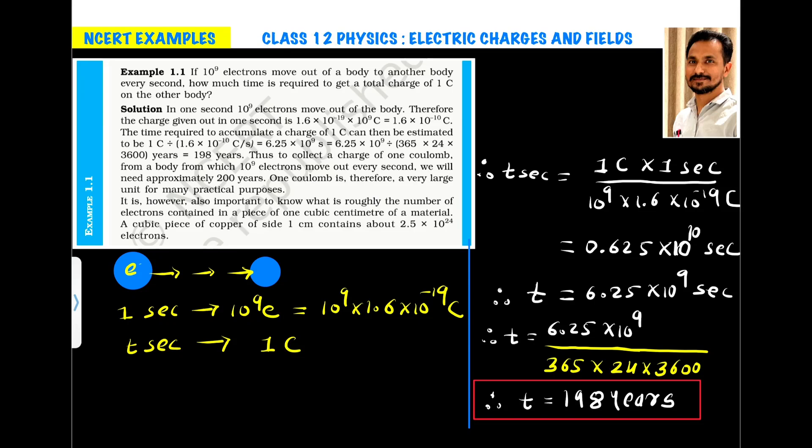Example 1.1. If 10 raised to 9 electrons move out of a body to another body every second, how much time is required to get a total charge of 1 coulomb on the other body?